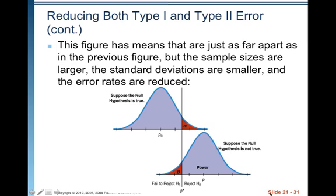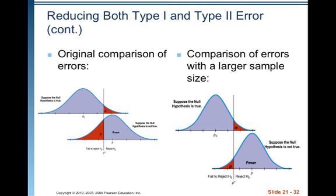That is the trick to getting everything we want. The limitation is that sometimes resources just aren't available. You don't have the time, money, or you just can't get enough responses to have a larger sample size. In the original comparison, you can see that alpha is somewhat bigger and beta is much, much bigger.